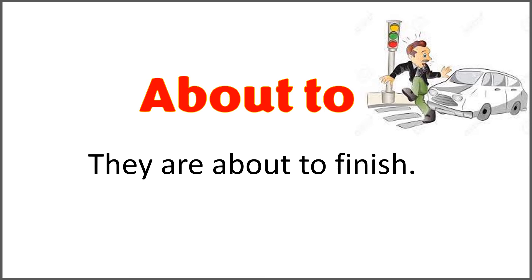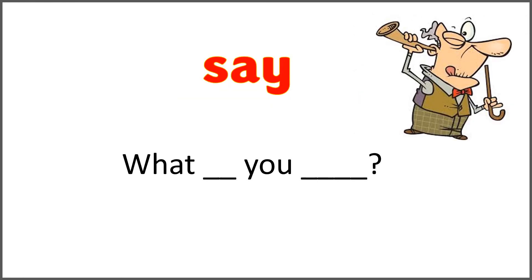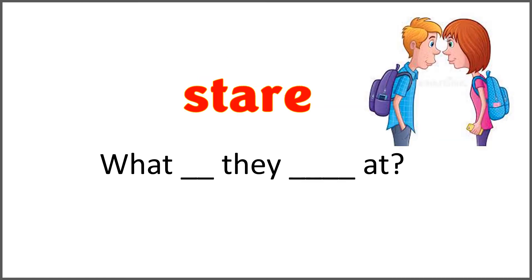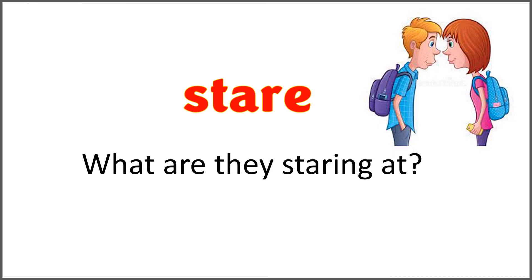The given word is 'say' and the sentence is 'what blank you blank?' Use the correct form of 'say' with 'are' to complete the question. What are you saying? We added -ing with 'say' to ask this question. The given word is 'stare.' What blank they blank at? Use the word 'stare' with 'are' to complete this sentence. What are they staring at? We added -ing with 'stare' to ask this question in the correct form.